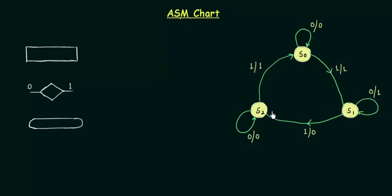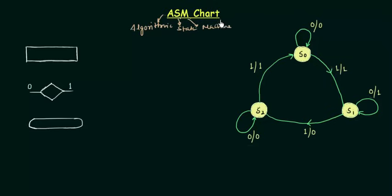You already know what a state diagram is and how to draw one. In this presentation I will explain an advanced version of this state diagram that we call the ASM chart, where ASM is an acronym for Algorithmic State Machine — A for Algorithmic, S for State, M for Machine.